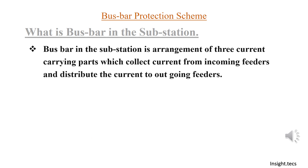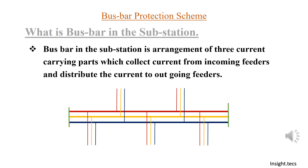Now when you go to a substation there will be three-phase current RYB. You can see in the busbar three current-carrying conducting parts, that means three incoming feeders, which then distribute to the outgoing feeders.